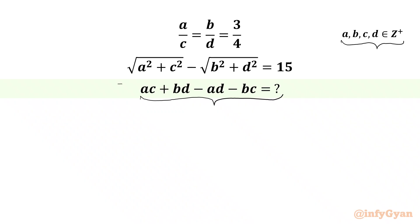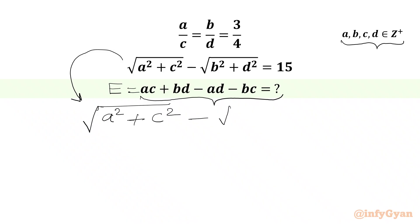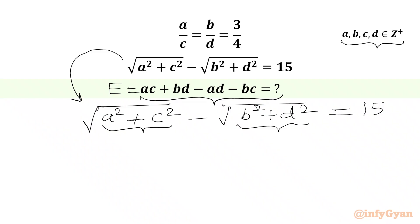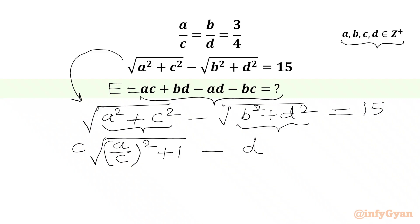Let us get started by writing the required expression equal to e. We will begin with the square root equation: square root of a squared plus c squared minus square root of b squared plus d squared equal to 15.